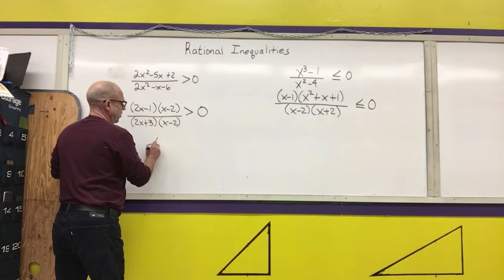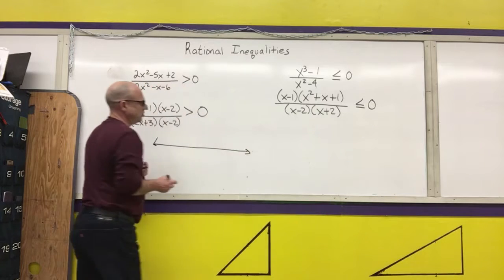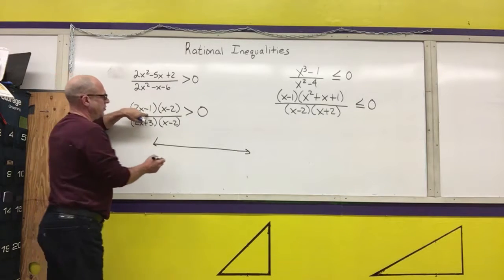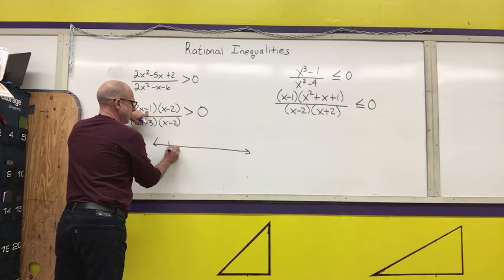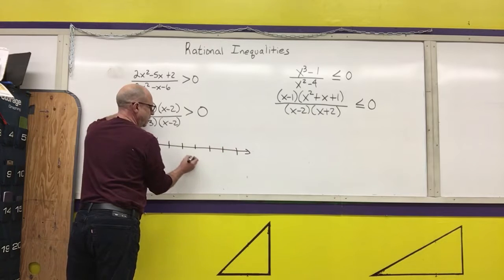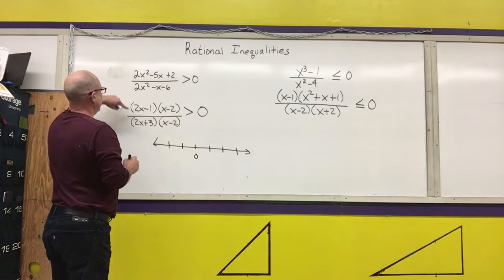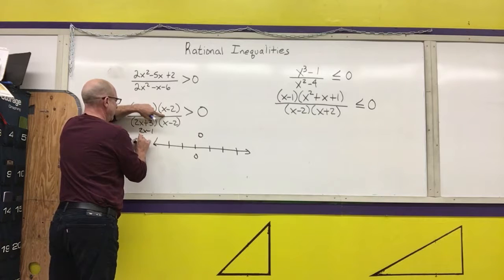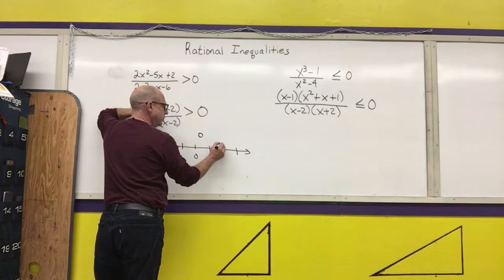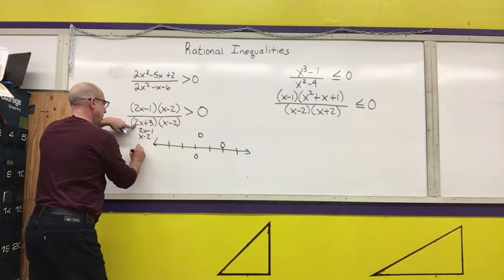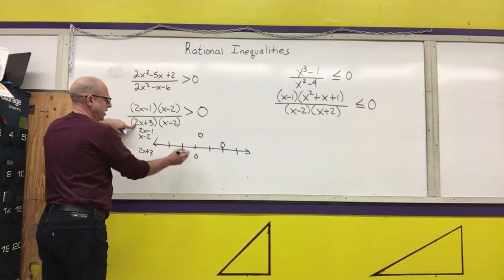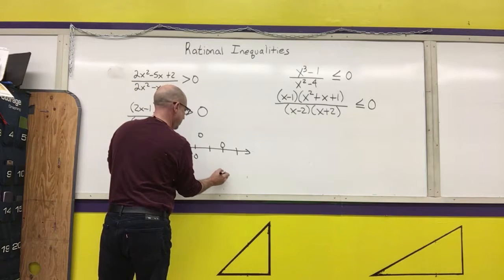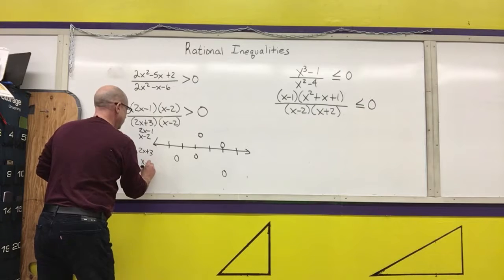The first thing you want to do is make a number line and mark off where the zeros of the numerator and the zeros of the denominator, if they were polynomial functions, would be. So: 2x minus 1 is zero at one-half; x minus 2 is zero at positive 2; 2x plus 3 is zero at negative one-and-a-half; and x minus 2 is zero at positive 2.